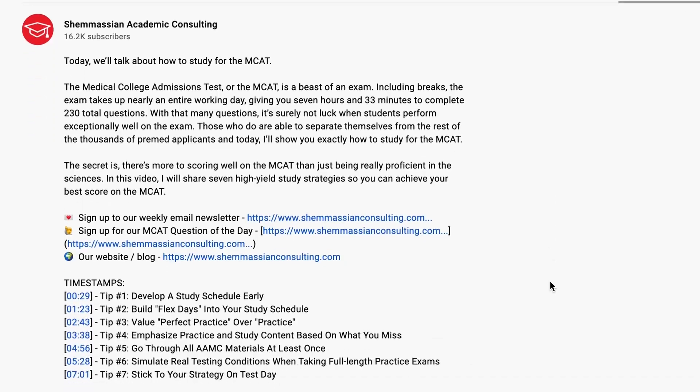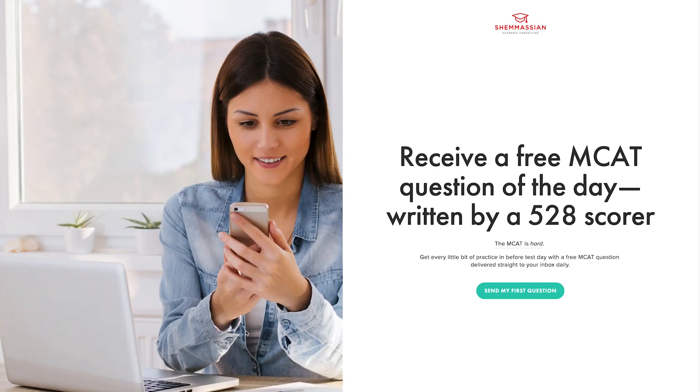The western blot and related experimental techniques often appear in the biology and biochem section of your MCAT. Throughout this video, we've learned what a western blot looks like, we've learned the anatomy of a western blot, and we've learned how to apply your knowledge of western blots to practice questions. We hope this video has been a helpful resource for you and your MCAT studying. If you'd like an MCAT question of the day delivered to your inbox every single day, click the link in our description. In addition, feel free to leave a comment if there's an experimental technique you'd like to see in our Experiment Explained series. Be sure to subscribe to our YouTube channel and like this video if you'd like to see more videos like this in the future. We'll see you next time and happy studying.